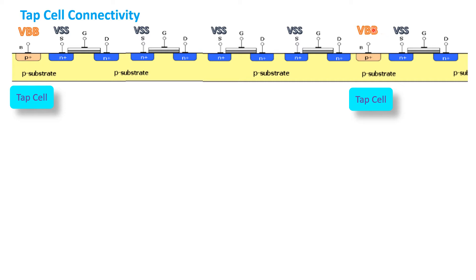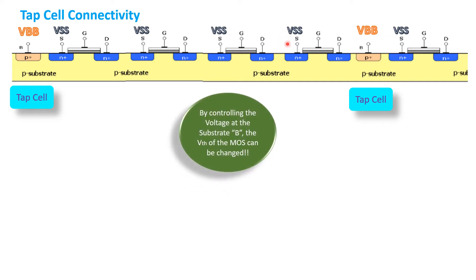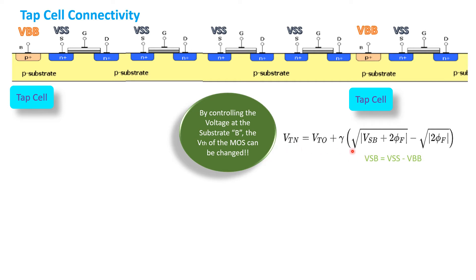The substrate connection is made to VBB, and the source is connected to VSS. If VBB and VSS are the same, that is called a zero-bias condition. However, if the voltages of VBB and VSS are different, it will lead to biasing the source junction and hence will affect the VTH of the MOS transistor. As per the VTH equation, for an nMOS device, VTH depends upon the source-to-substrate voltage.